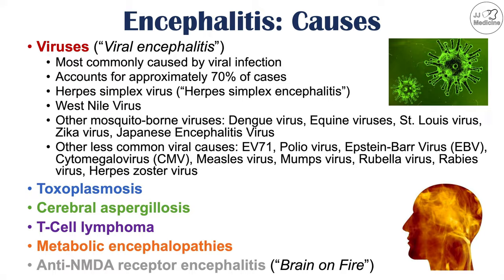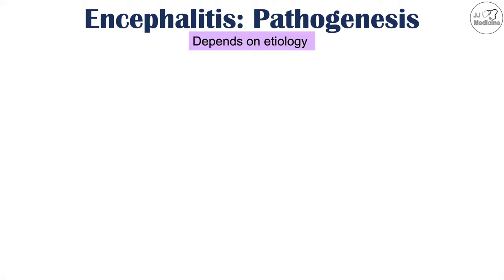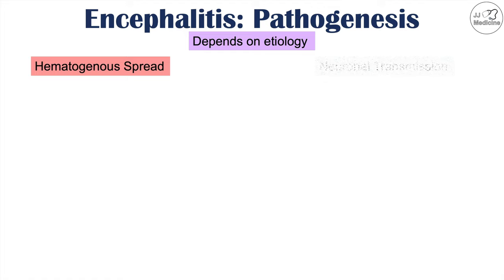The pathogenesis of encephalitis depends on the etiology. Focusing on viral causes, most viruses undergo hematogenous spread. A patient gets bitten by a mosquito carrying a virus, that virus multiplies in the bloodstream, and then enters the spinal cord and infects the brain parenchyma. The other mechanism is neuronal transmission, where a virus infects a tissue, enters a neuron, remains dormant, and then is triggered to transmit through that neuron to the brain.